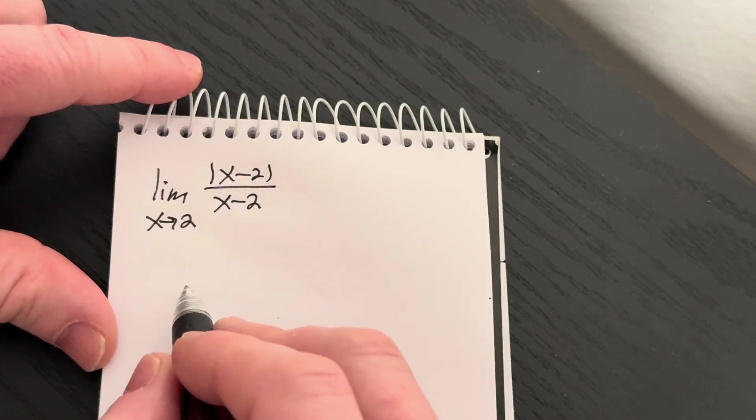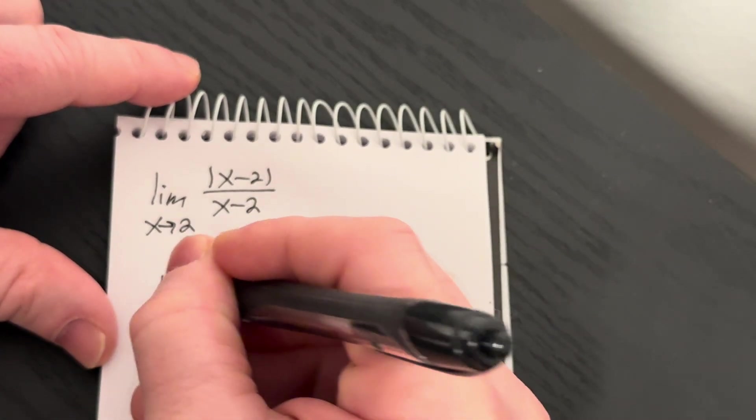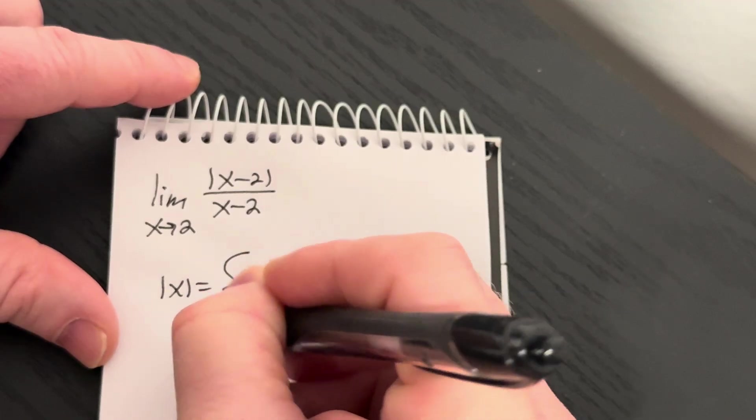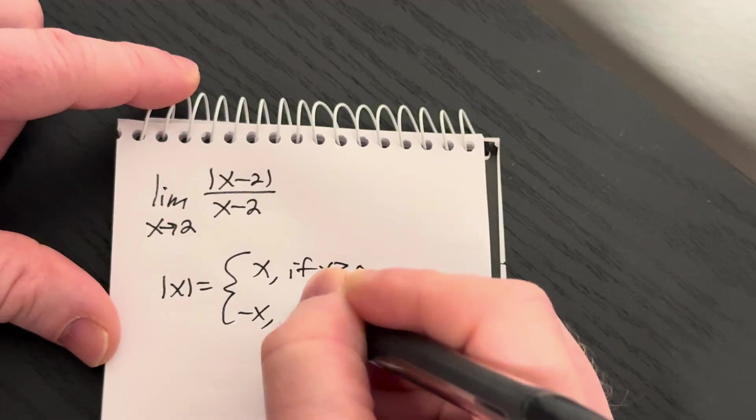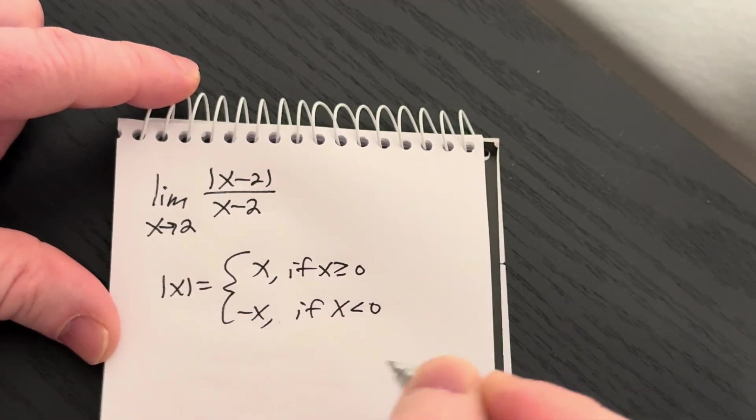So to figure this out, first just recall the definition of absolute value. It's x if x is greater than or equal to 0, and it's minus x if x is less than 0.